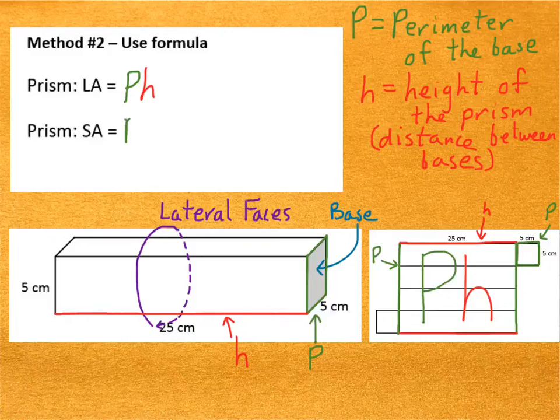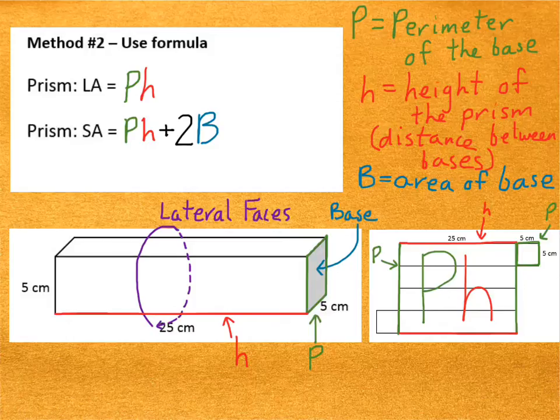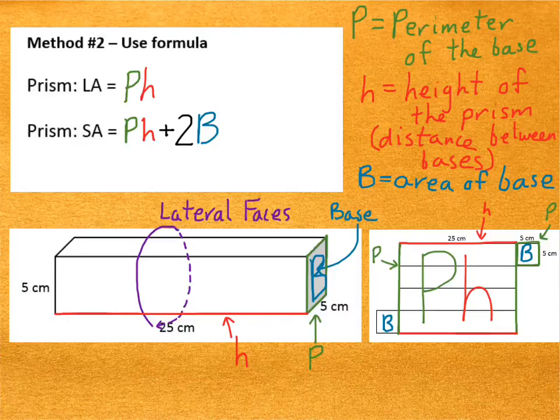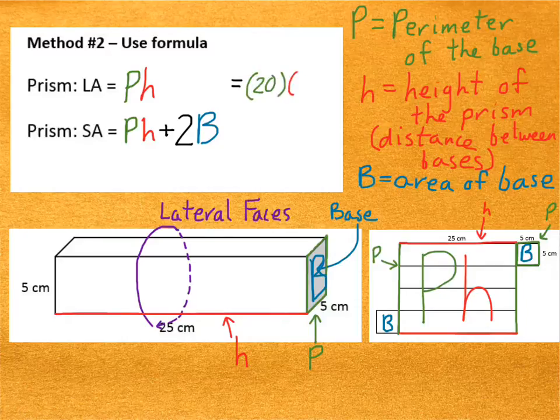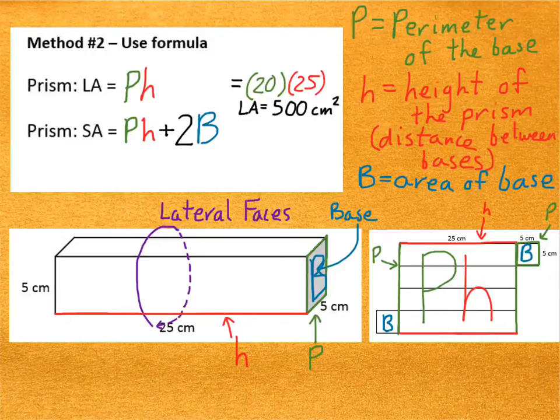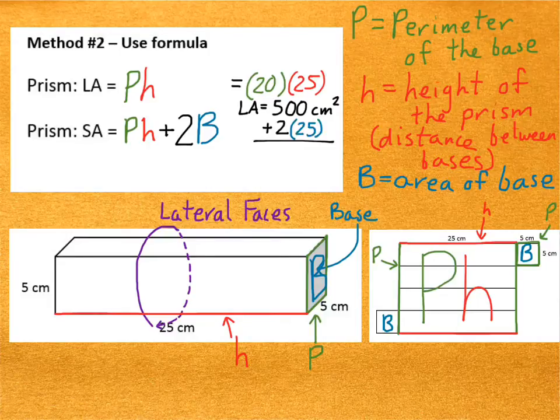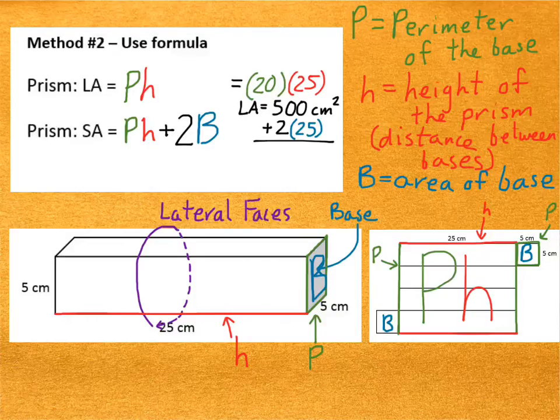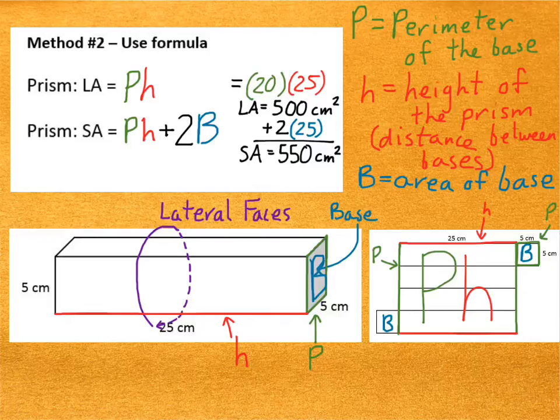For the total surface area, the formula is PH plus 2B. We're adding the two of the areas of the bases. The reason why, I hope, should be obvious. Here's B, the area of the base. On the net, we have two bases, so we have to add two additional areas. They both have the same area, so it's just two times the area of one base. Let's plug in some numbers. The perimeter of the base here is 20, 5 plus 5 plus 5 plus 5, and the height is 25. If we multiply those, that would mean the lateral area of this prism is 500 square centimeters. To get the total surface area, I just need to add two of the areas of the bases. The area of the base is 25, so that would be 50, so I would get a total of 550 square centimeters. That's the same answer we got using the other method. That's just a verification that both methods are equally valid.